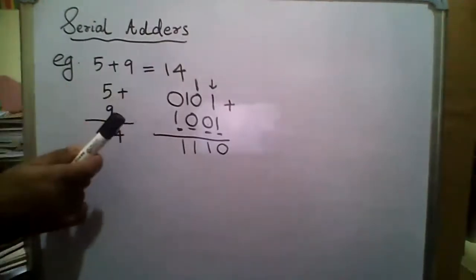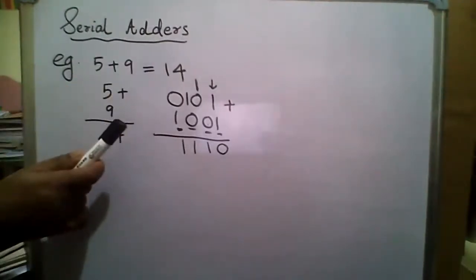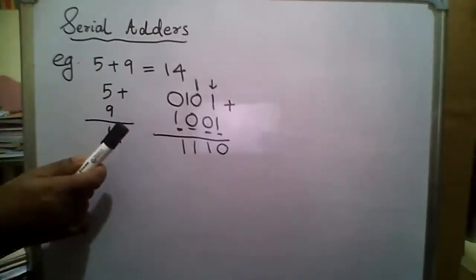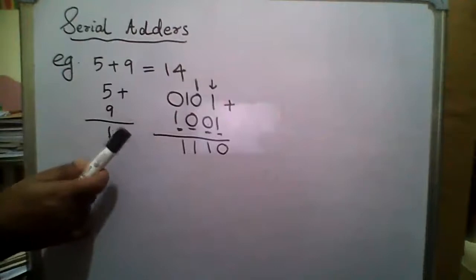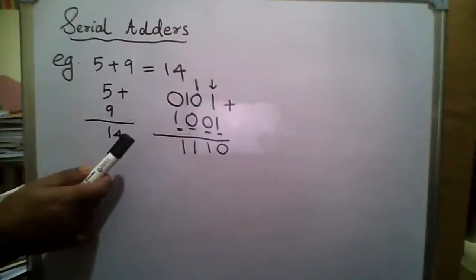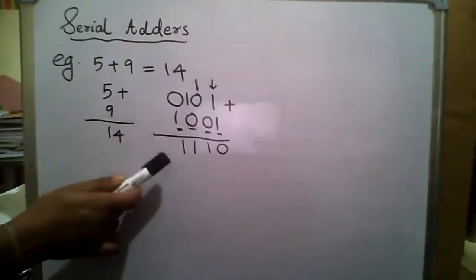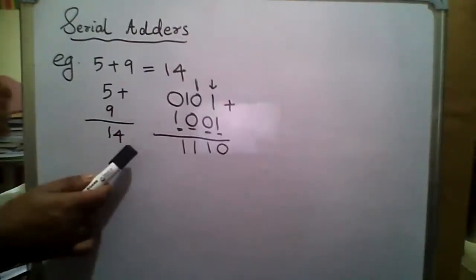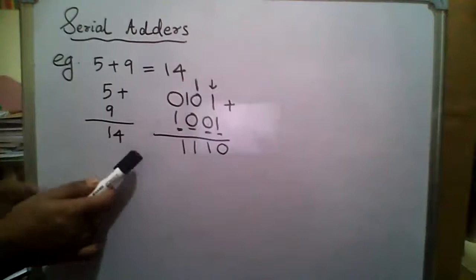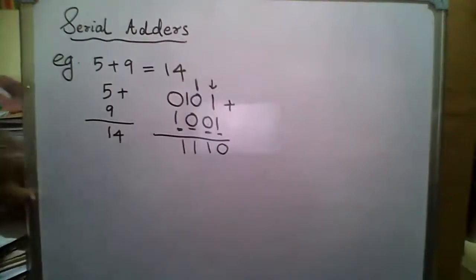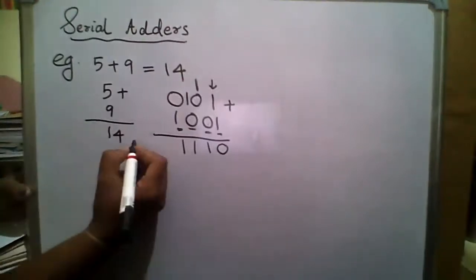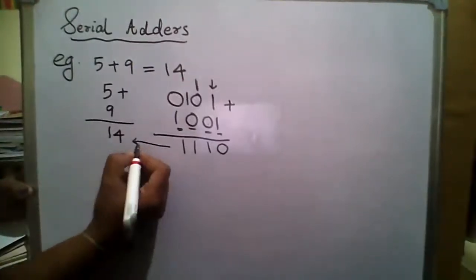For 5 and 9 in binary, what is the equivalent decimal representation of 1110? The equivalent decimal representation is 14. So 5 plus 9 equals 14, confirmed by the binary addition.